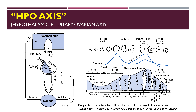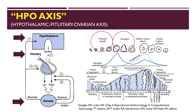The menstrual or ovulatory cycle is actually an orderly sequence of events involving a remarkable coordination or communication at several levels of the HPO, or what we call the hypothalamic-pituitary-ovarian axis, as well as other organs outside of this axis, such as the uterus and the cervix. The proper functioning of this HPO axis is very crucial in stimulating, instigating, or even maintaining the proper sequence of events in the menstrual cycle, such as folliculogenesis, ovulation, formation of the corpus luteum, and finally menstruation.